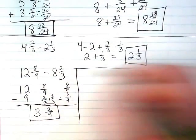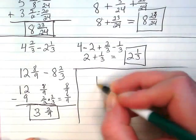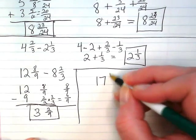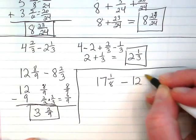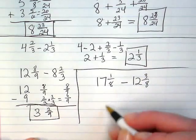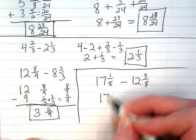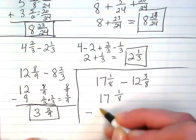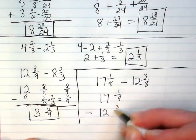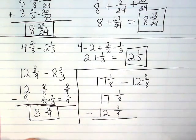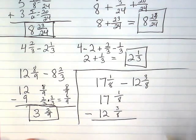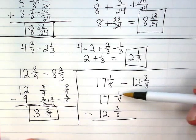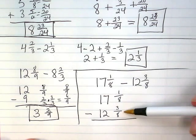Okay, our last example. 17 and 1 eighth minus 12 and 3 eighths. So 17 and 1 eighth minus 12 and 3 eighths. Alright, right away I'm noticing I have the same denominator, which is great. I don't have to convert the fractions. But I'm noticing that this is 1 eighth and I'm taking 3 eighths away from it. That means I do have to do some borrowing.